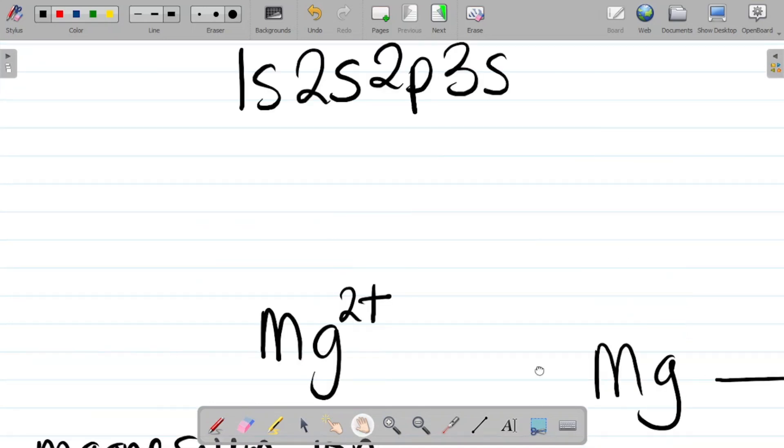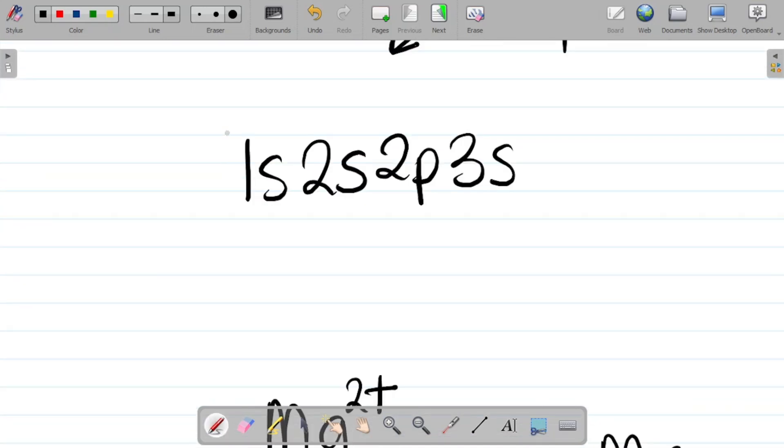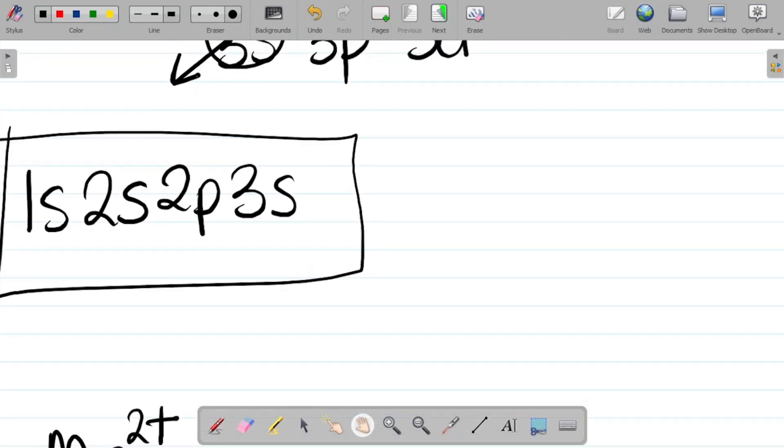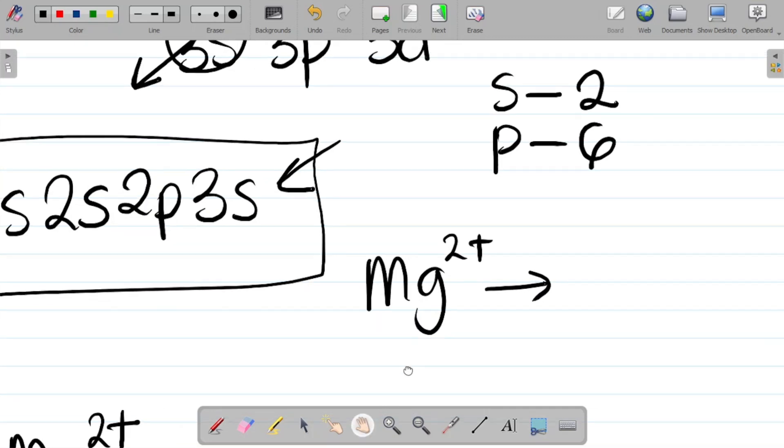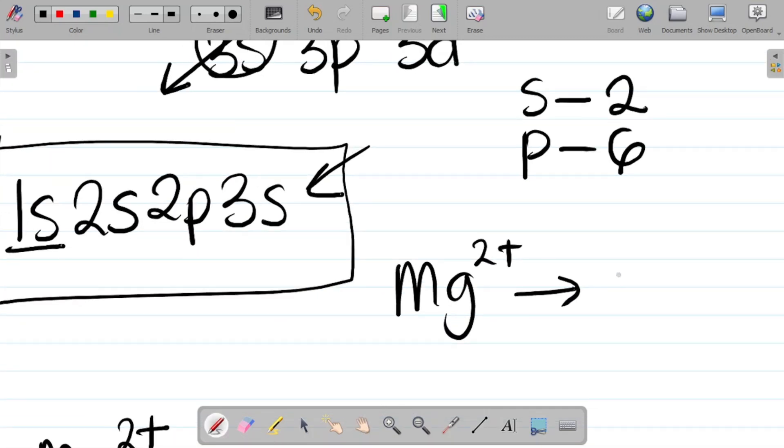It means that in a magnesium ion, we have 10 electrons because 2 has been lost. This is key to answering this question. We have 10 electrons. We'll arrange 10 using this configuration. Note that for S, the maximum number of electrons that S can contain is 2. For P, the maximum number of electrons that P can contain is 6. For magnesium Mg²⁺ having 10 electrons, the first thing I have is 1s. We'll fill up 2 because for S the maximum is 2. So it becomes 1s². After 1s, the next thing is 2s. We're having 2s. Also for S, the maximum is 2 electrons. That becomes 2.